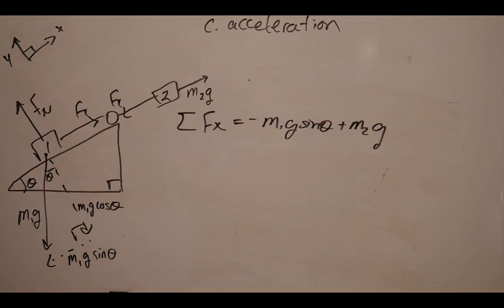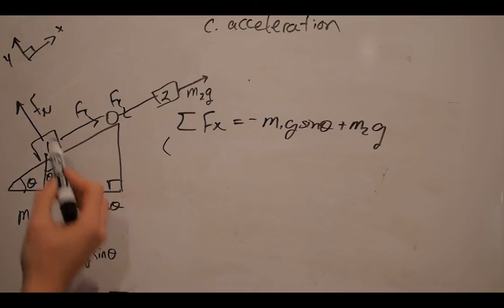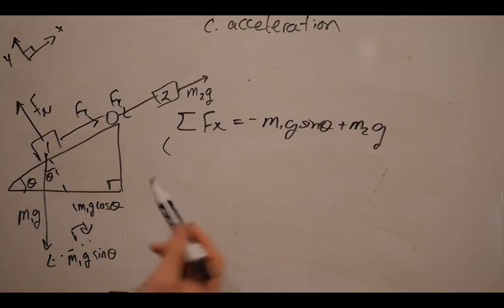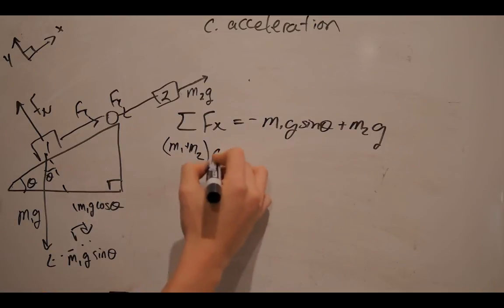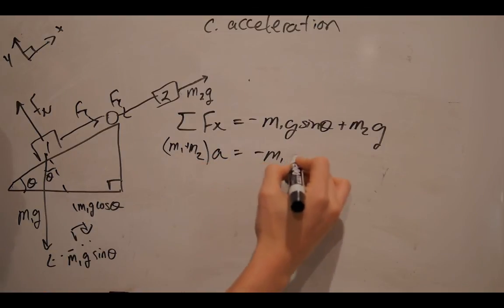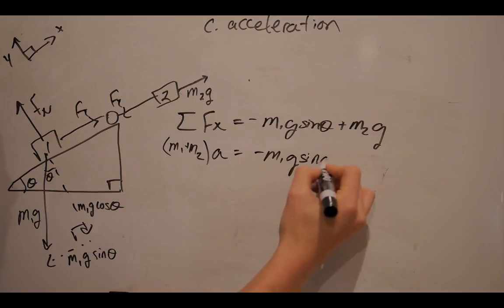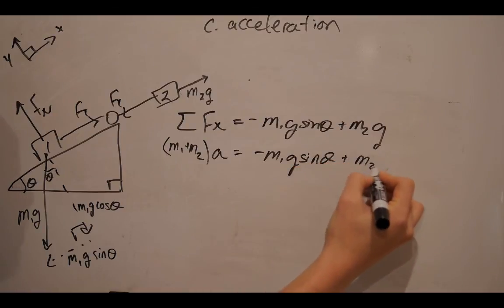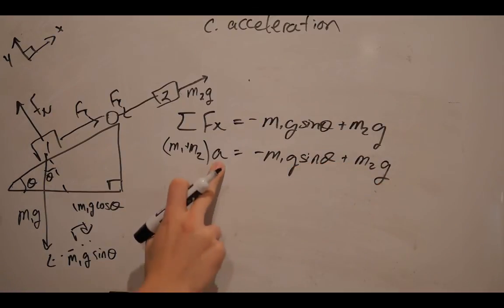So, Newton's second law states that the sum of all the forces is the sum of all the masses in the system. So, we have 1, 2 masses times the acceleration is equal to the sum of all the forces along that axis. We're looking for acceleration,